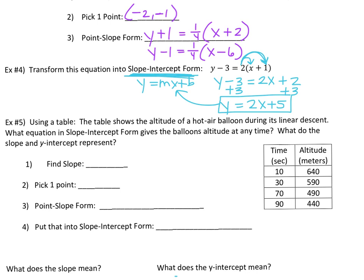Distribute first, then isolate y — that's the process. We'll do that again on the next one too. Just wanted a trial run before we add a bunch of numbers.